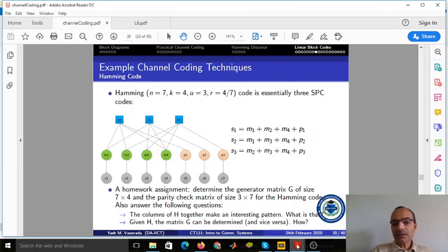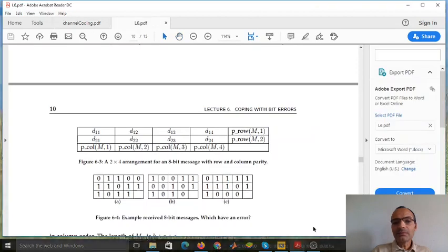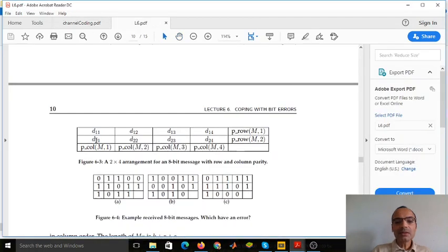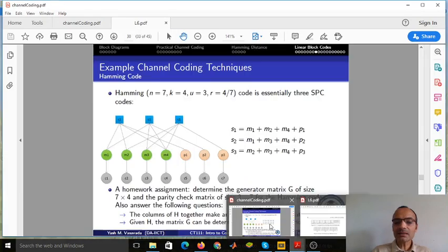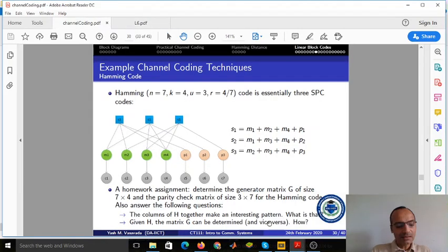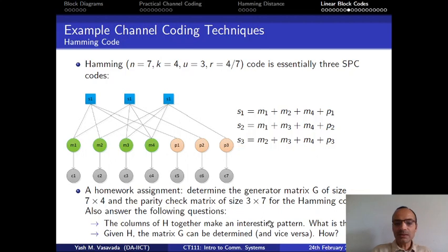Whereas if you look at the RPC code, you can see that this four parity bits are protecting only two bits, whereas these two parity bits on the column end up protecting four bits. And so there is some uneven assignment of parity to the message bits that those parities are checking.